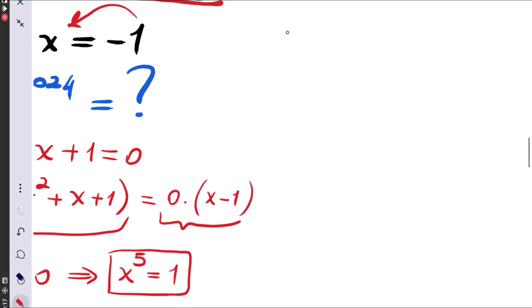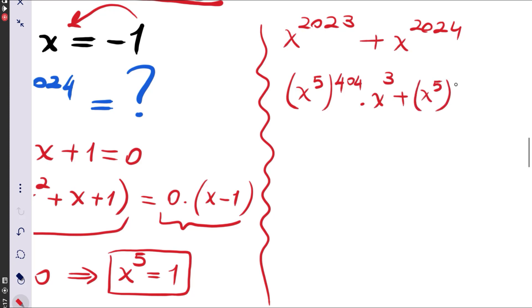We have x to the power 2023 plus x to the power 2024. We will write this as x to the power 5 to 404 times x cubed and the other one as x to the power 5 to 404 times x to the power 4.